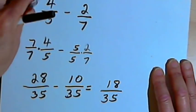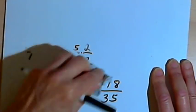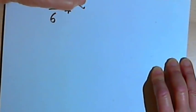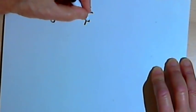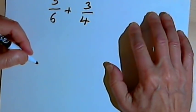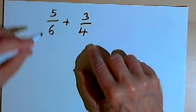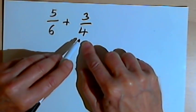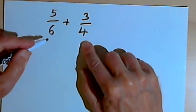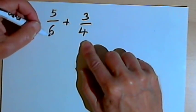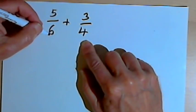Now I want to do one more just to make a point about common denominators. Let's take this problem: 5 over 6 plus 3 over 4. A lot of times you're probably told to find the lowest common denominator — well, I'm not going to do that. I've got a 6 and a 4, and I'm going to say that the common denominator I want is 24. I know that's not the smallest denominator I could use, but let's just see what happens.